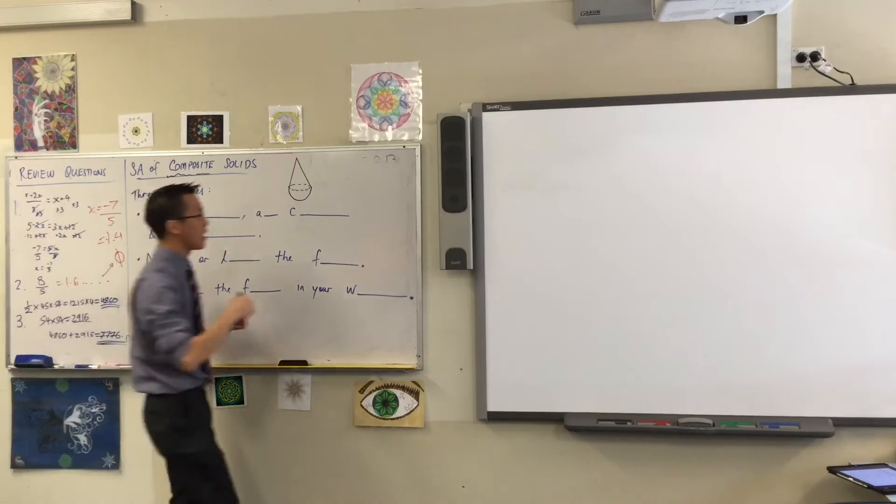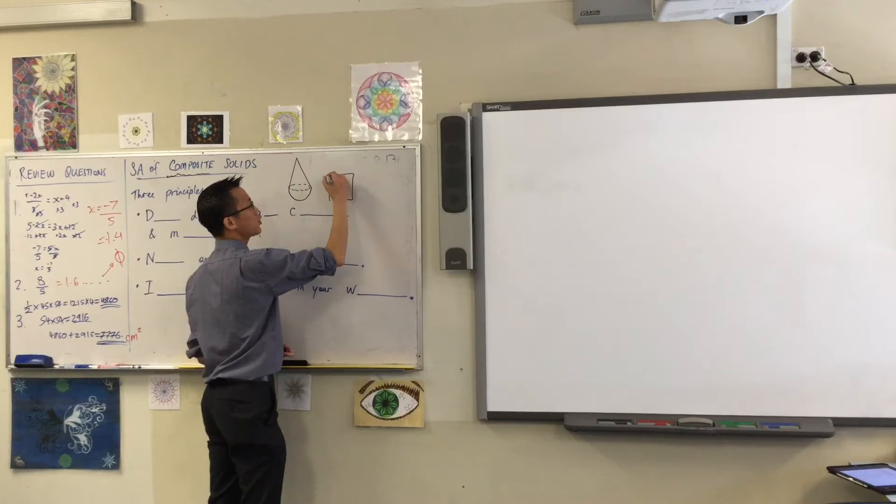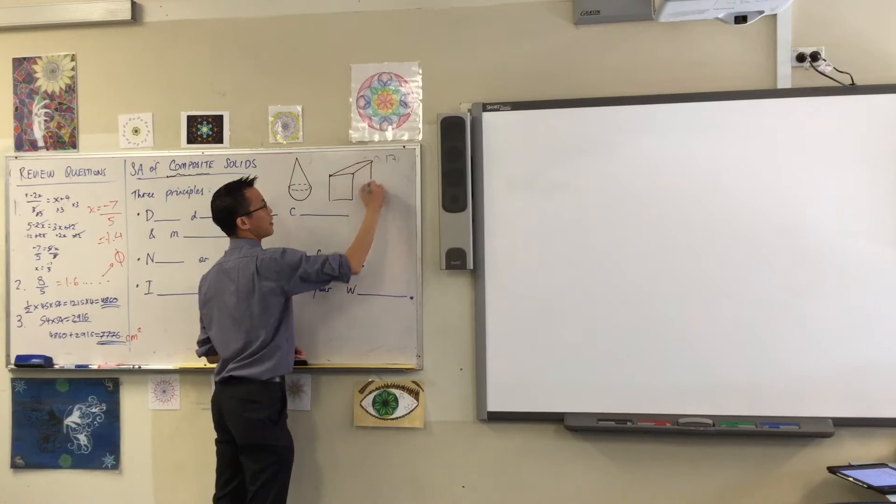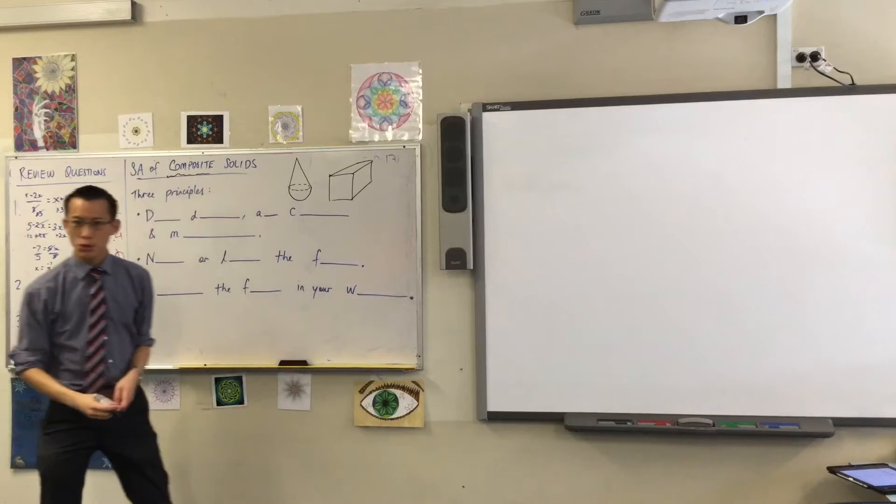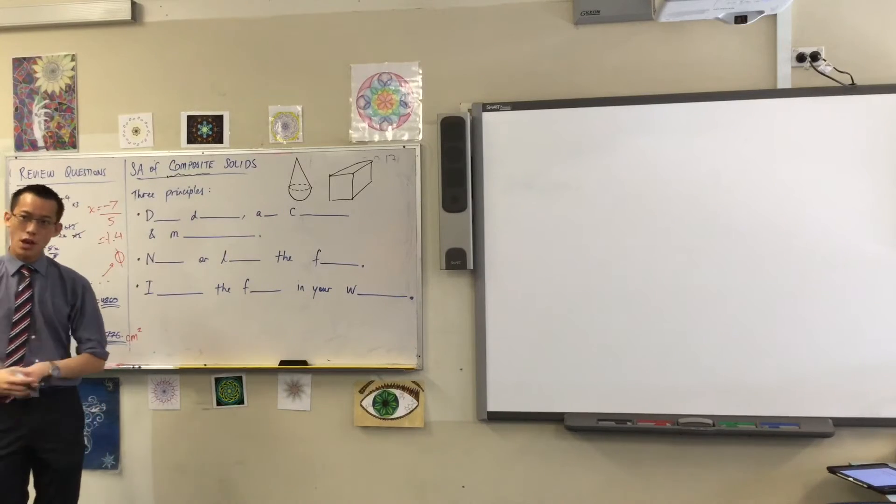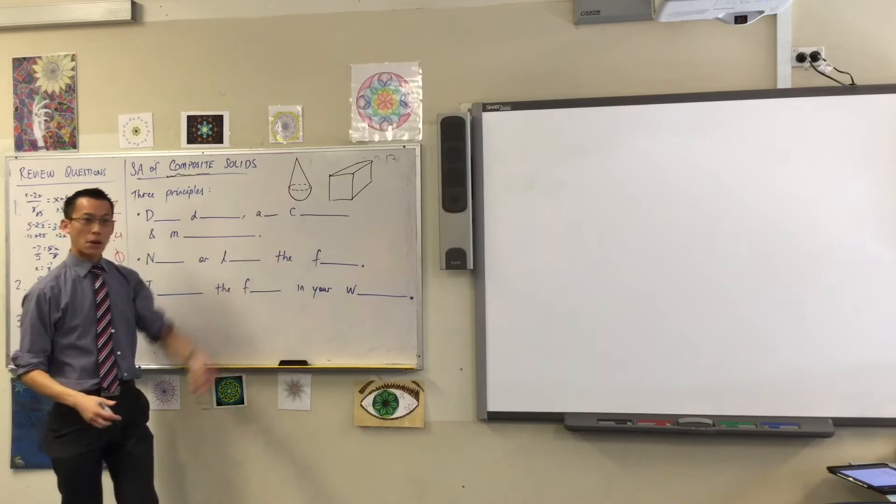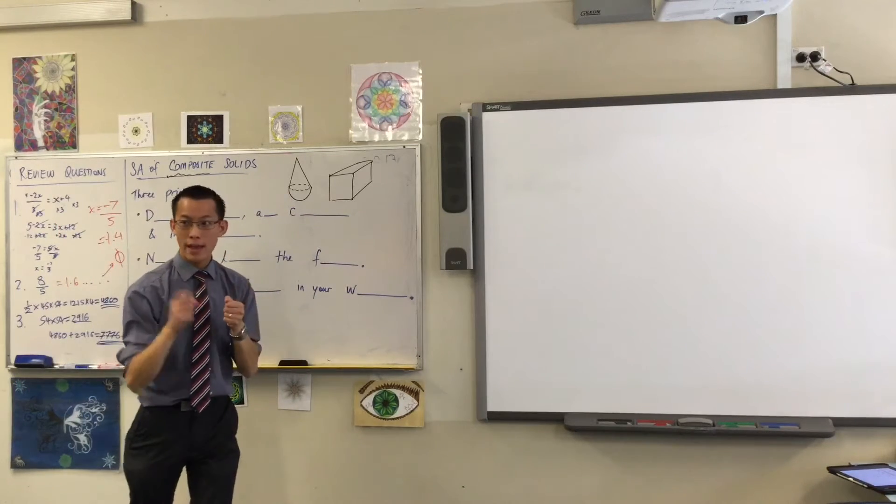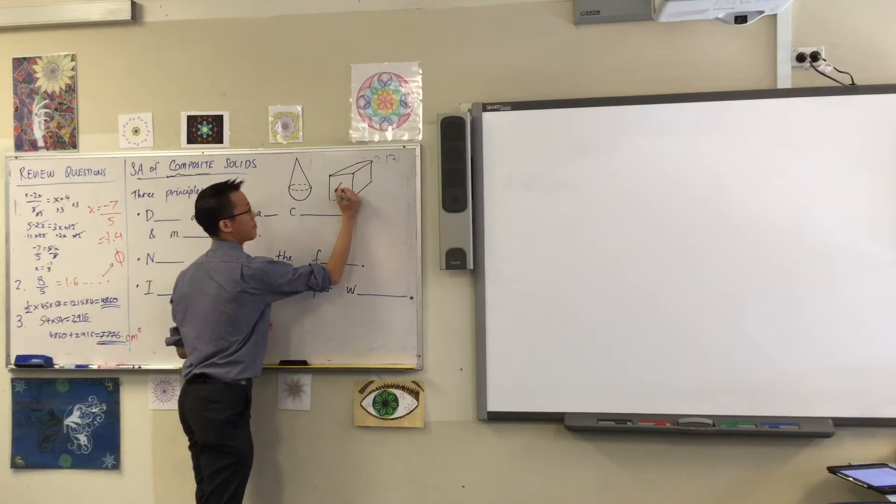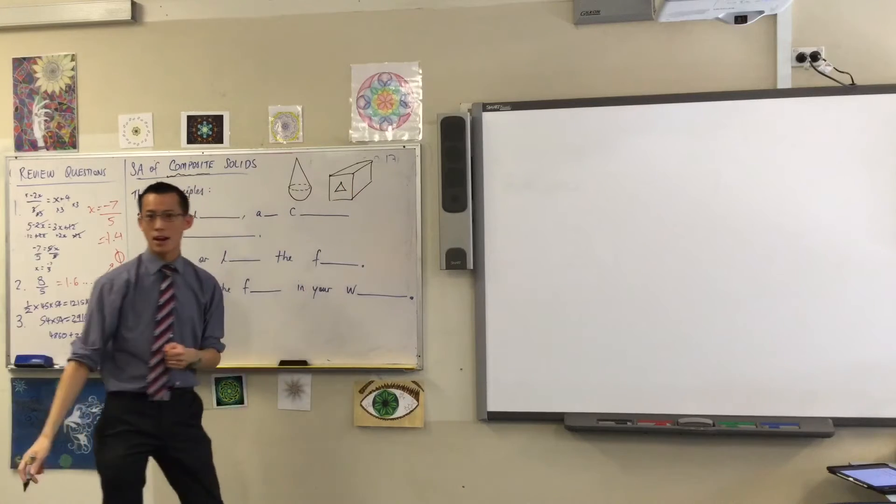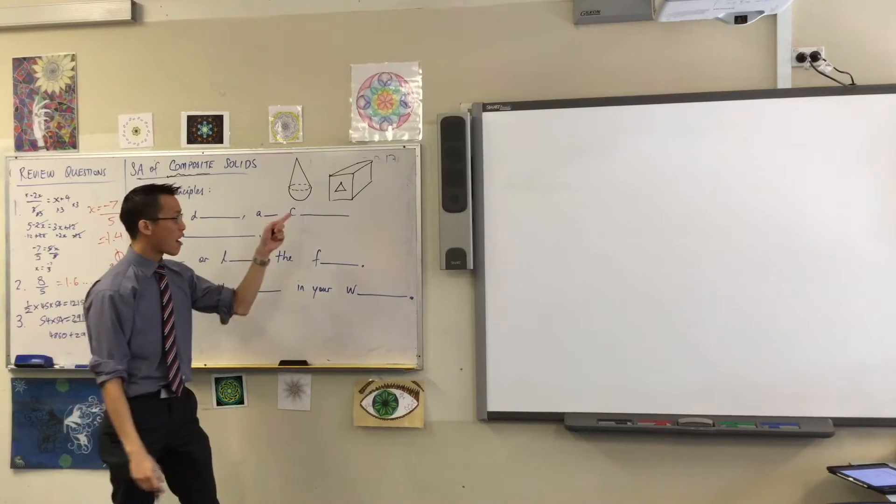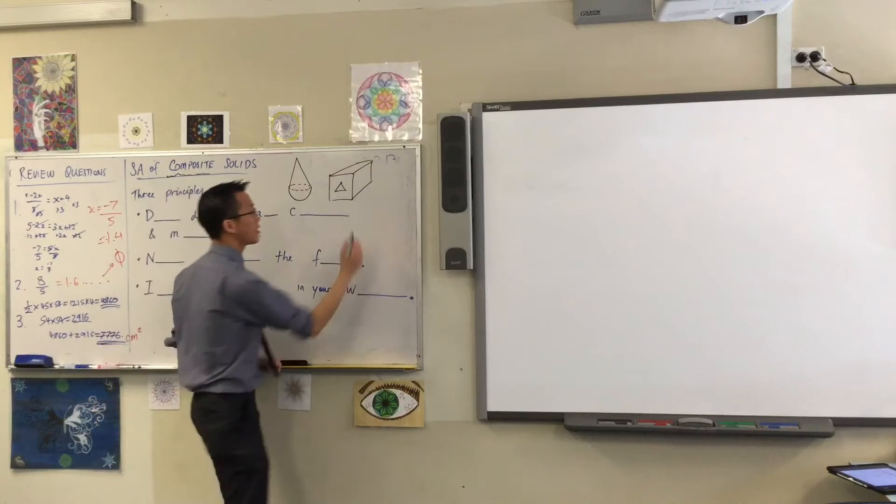You can do this with anything. For example, if we took a cube, a simple cube, right? A way I could turn this into a composite solid is not by adding something on, but I could take something away. For instance, if I punched a hole in here, right? There was a triangular prism all the way through.